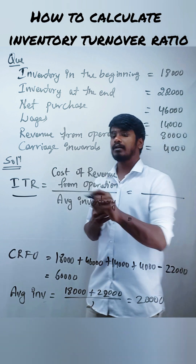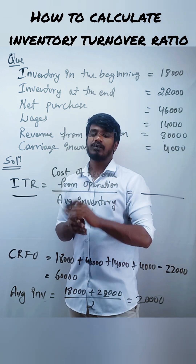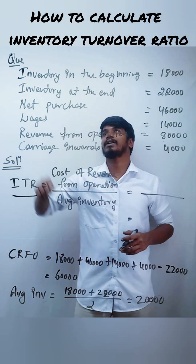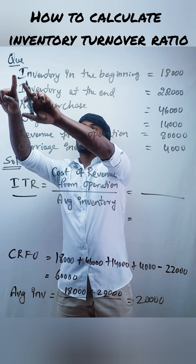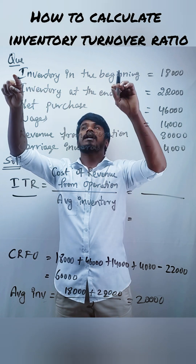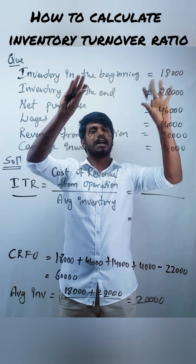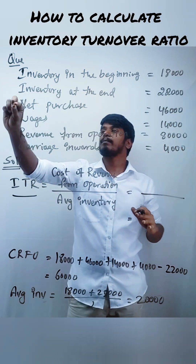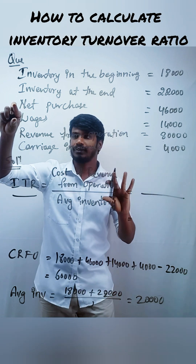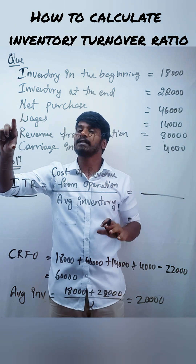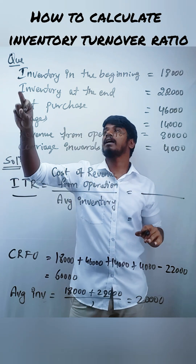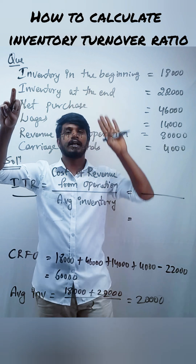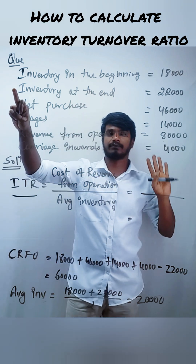So how can we get the cost of revenue from operations? We need to add inventory in the beginning, plus net purchases, plus wages, plus carriage inward, and minus the inventory at the end of the year.